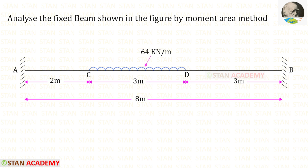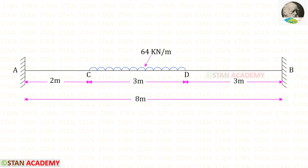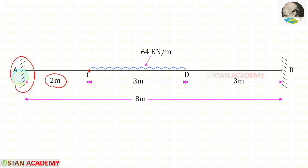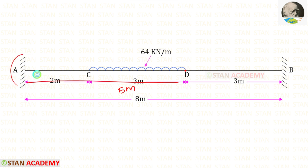Hello everyone. Today we are going to analyze a fixed beam using the moment area method. The span of the beam is 8 meters. We have a uniformly distributed load of 64 kilo Newton per meter, which acts for a distance of 3 meters. It starts at 2 meters from the left support and ends at 5 meters from the left support.